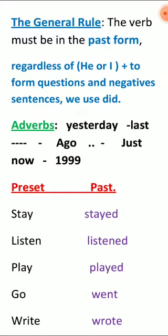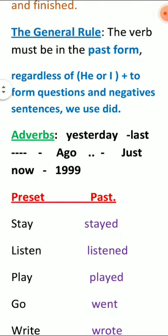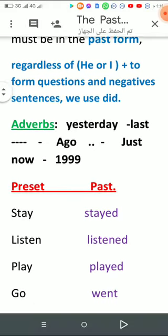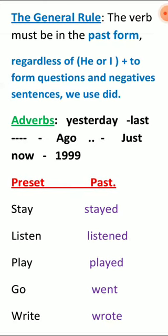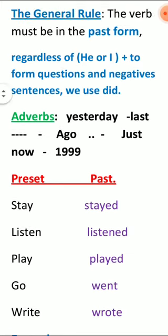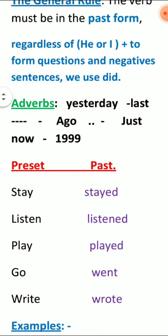في النفي نضيف أداة النفي. في كل جملة لازم تكون هناك مفاتيح تساعدنا على معرفة أن هذه الجملة تعمل في الزمن الماضي. هناك مفاتيح كثيرة.